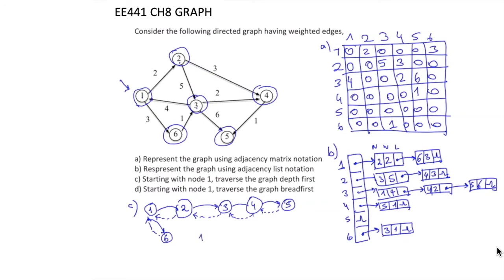The depth-first traversal order starting from node 1 is: 1, 2, 3, 4, 5, 6.